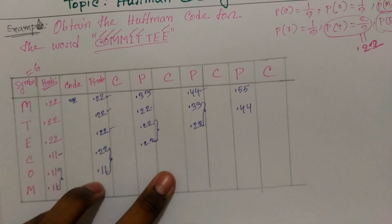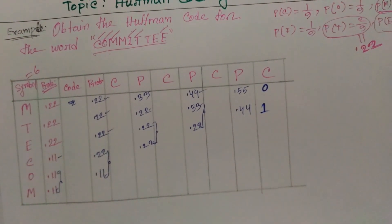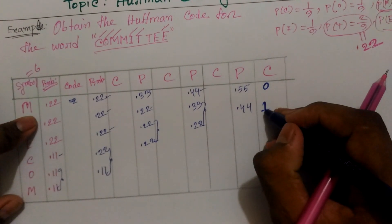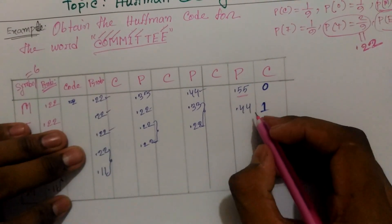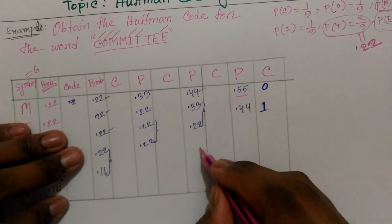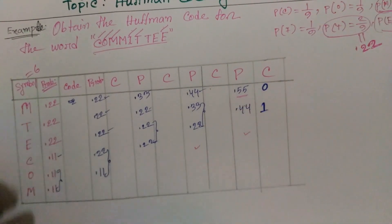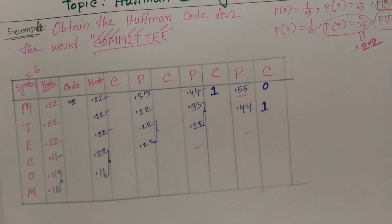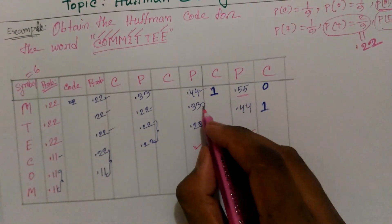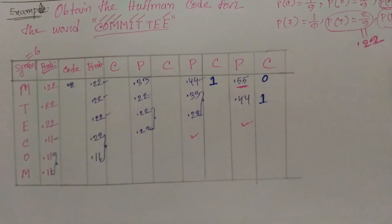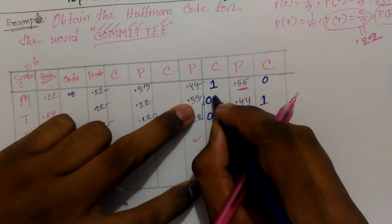The value of 0 is 0. And the value of 0 is 1. So this value of 0 is 0 and the value of 0 is 1. Now I will write this as 0.55. The value of 0 is 0.44. Now the value of 0.44 is 0.44. Now the value of 0.55 is 0.55. The value of 0.48 is 0.